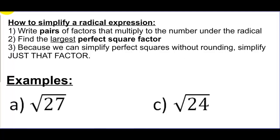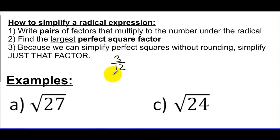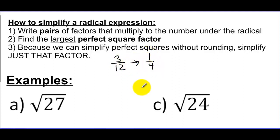The idea of simplifying radical expressions is very similar to how you simplified fractions. If I gave you a fraction like 3 over 12, we'd look at this and say, wait a second, I can actually simplify this because this has a factor of 3 and this has a factor of 3. I can turn it into something that looks a little bit simpler, with smaller numbers — and that's what we like.